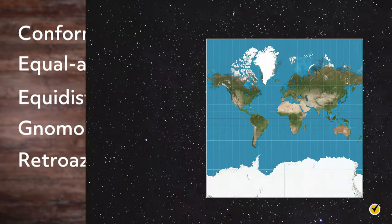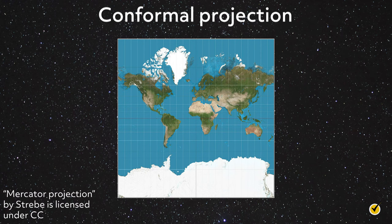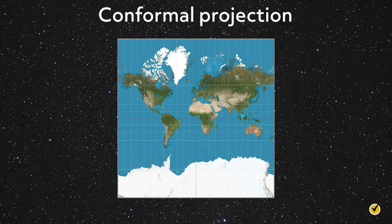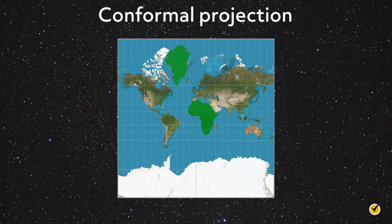In cartography, a conformal map projection, like the Mercator projection seen here, is one in which every angle between two curves that cross each other on Earth are preserved in the image of the projection. This allows for the shape of features to be preserved at the cost of their size or area. Because of this, conformal projections preserve only smaller ratios, while inherently distorting larger figures. Notice how Greenland appears to be the same size as Africa when, in reality, Africa is 14 times larger than Greenland.